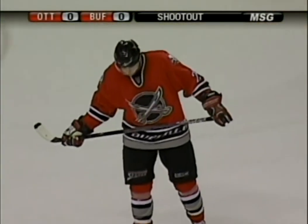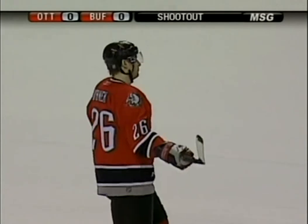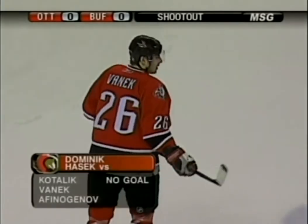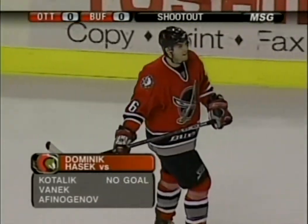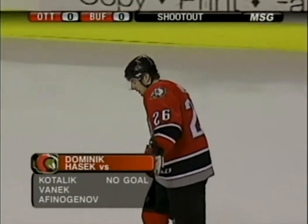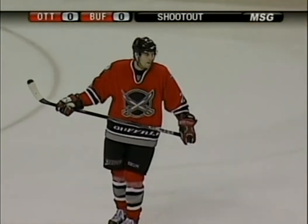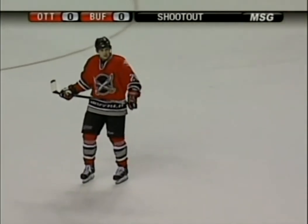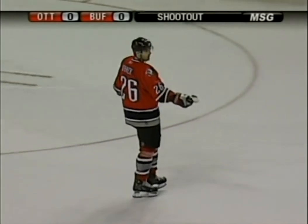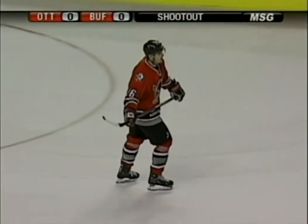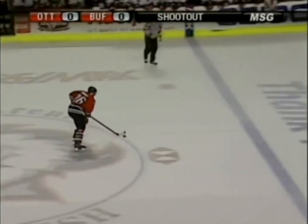The Senators are 0-for-2, Buffalo 0-for-1, and Thomas Vanek will shoot for the Sabres against Hasek. All of this after the game ended in overtime tied at 1. And now Vanek will try and break the goose eggs.